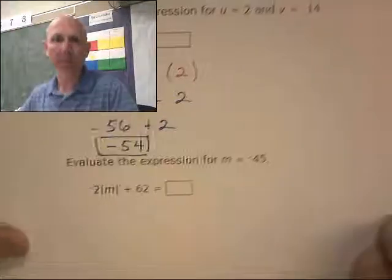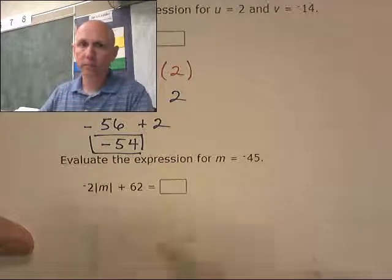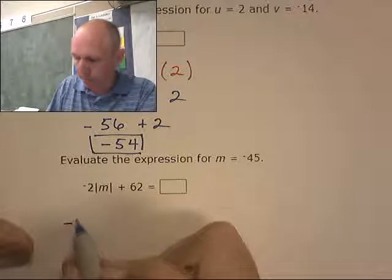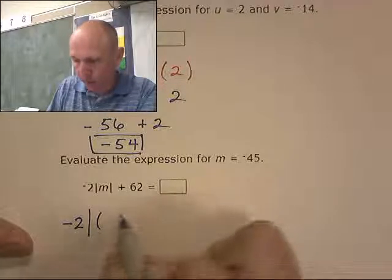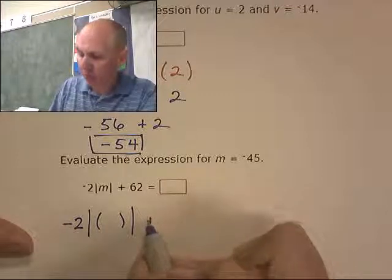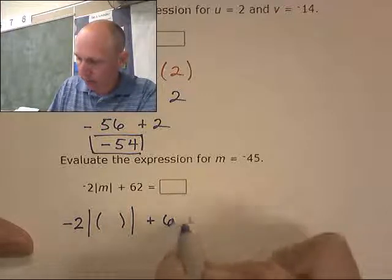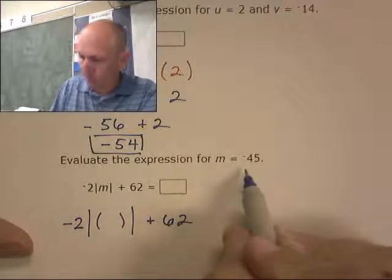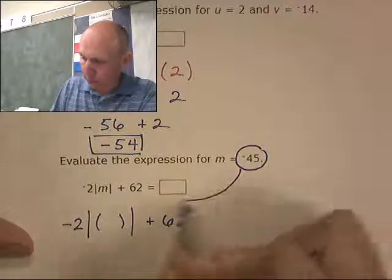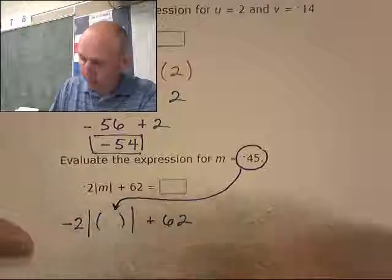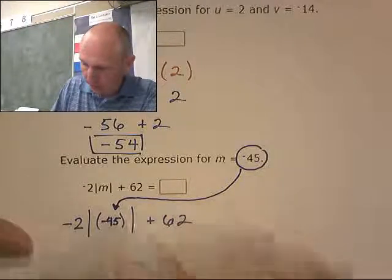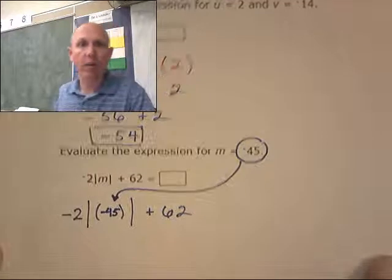Let's try another one. My variable is m. I am going to replace m with parentheses. And I'm keeping those absolute value bars. Plus 62. I'm taking the negative 45, putting it into the parentheses. And now I will evaluate it.